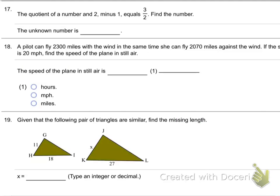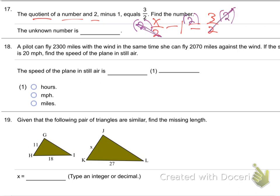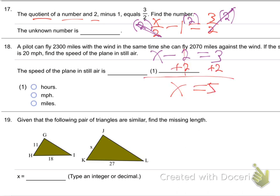Number 17. The quotient of a number and 2 minus 1 equals 3 halves. Multiply through by the common denominator 2: 2 cancels everywhere. X minus 1 times 2 gives X minus 2 equals 3. Add 2 to both sides. X equals 5.